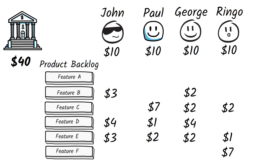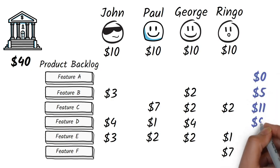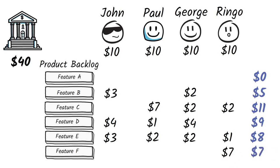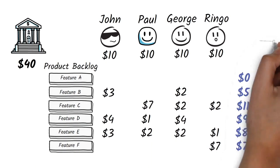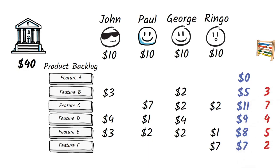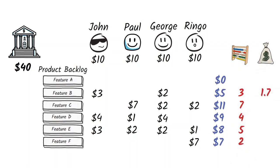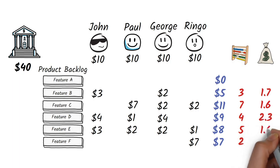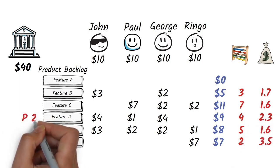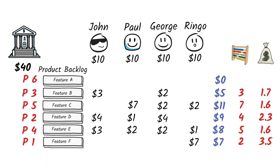Once we've got those bids, we can determine the relative value of each item by calculating the total development dollars bid on it. The developers can then estimate the cost of each backlog item that has been bid on. With those two values we can work out a rough return on investment by dividing the total bid by the development cost. We order the backlog by return on investment, giving us priorities in this order: F, D, B, C, and E.